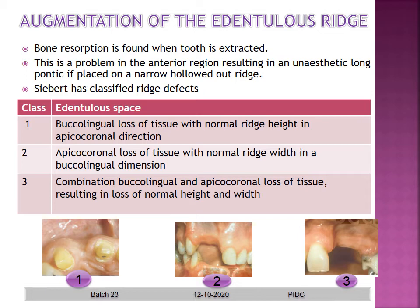The second procedure is augmentation of edentulous ridges. Bone resorption always occurs after tooth extraction, particularly problematic in anterior teeth resulting in an unaesthetic pontic on a narrow hollowed-out ridge. Seibert classified these ridge defects: Class 1 — buccolingual loss of tissue with normal ridge height in the apico-coronal direction; Class 2 — apico-coronal loss of tissue with normal ridge width in the buccolingual dimension; Class 3 — a combination of buccolingual and apico-coronal loss of tissue resulting in both reduced height and width.